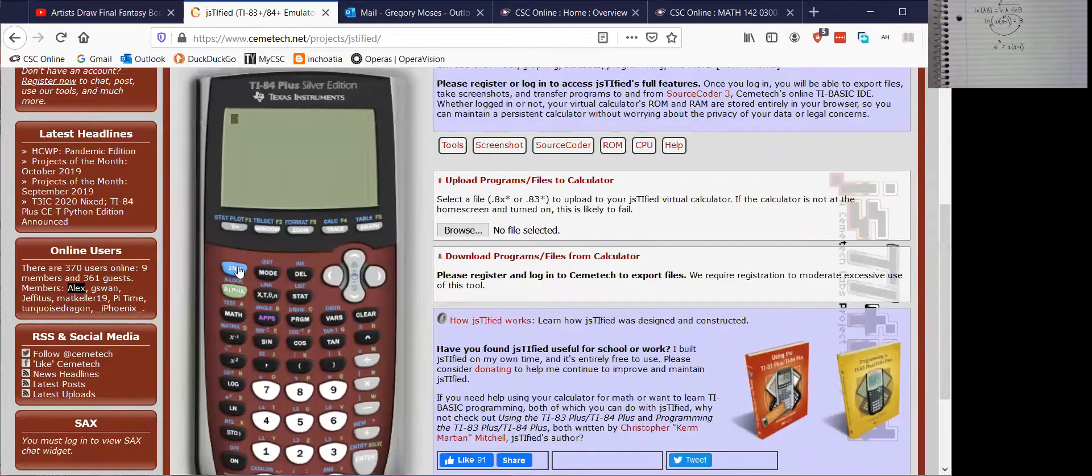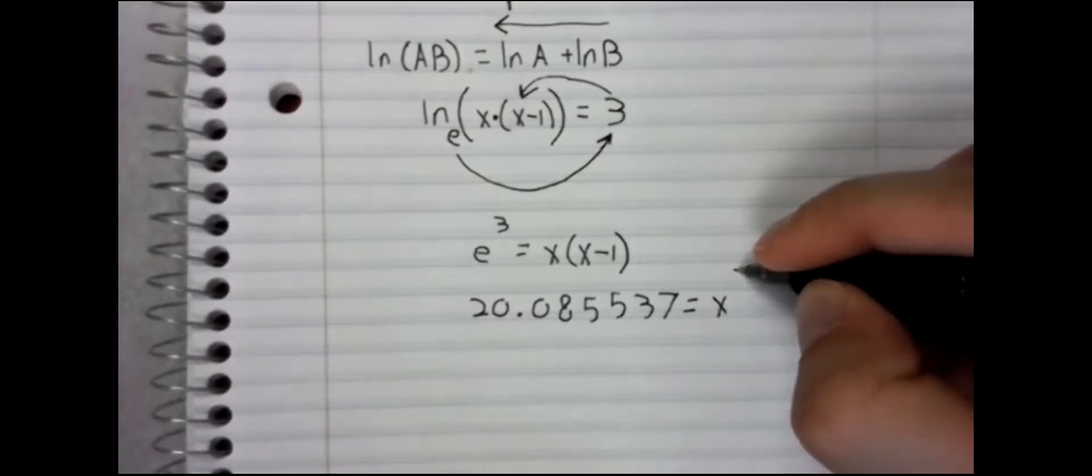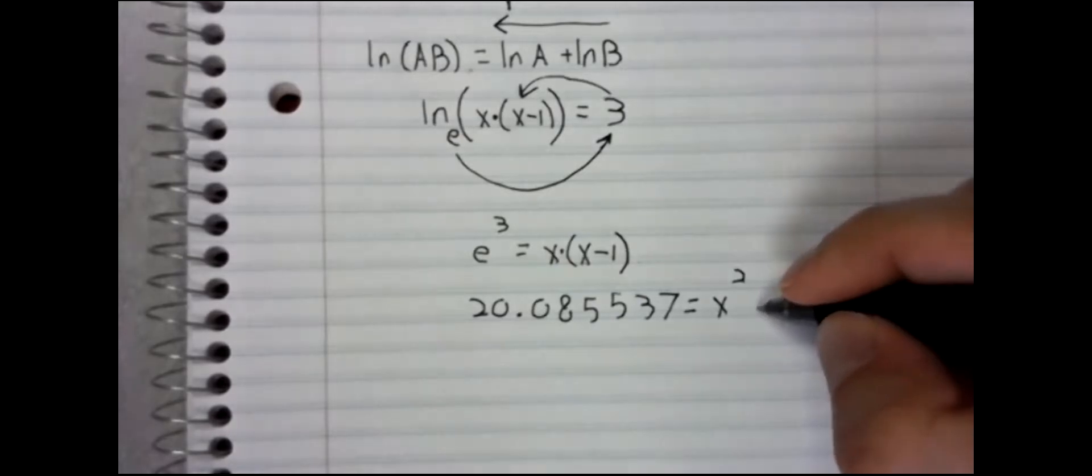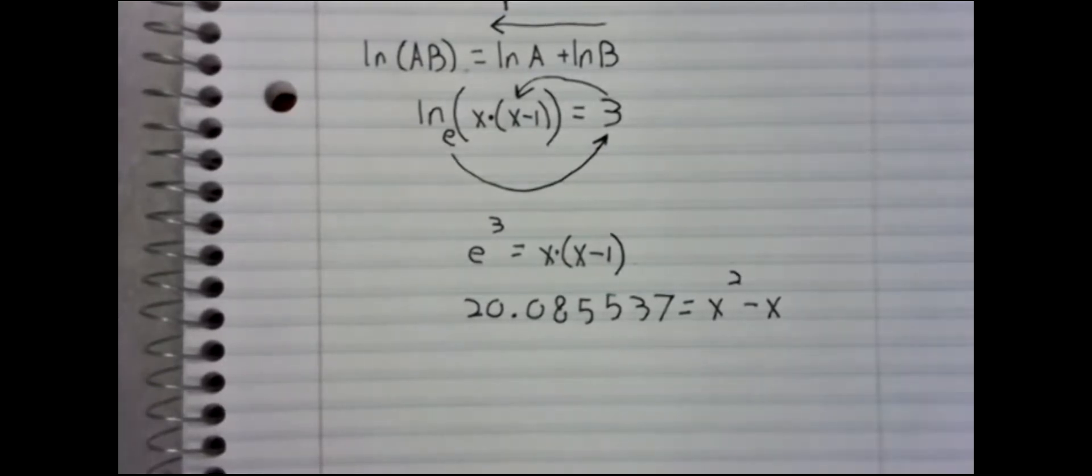I mean e cubed is just a number. Let me show you on my calculator. The calculator shows e cubed is 20.085537. And the right-hand side of this, if we multiply this out, this multiplication distributes over this subtraction, is x squared minus x.